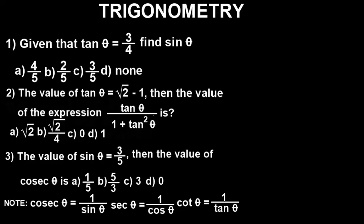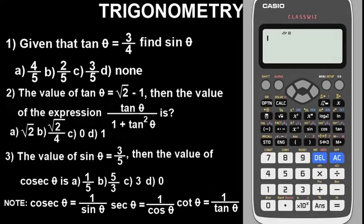Before we bring the Casio calculator on screen, let's look at the equations here and check what we are asked to find, then begin to solve them one after the other. Question 1: given that tan theta equals 3 over 14, find sin theta. Question 2: the value of tan theta equals root 2 minus 1 — find the value of the expression. Question 3: given that sin theta equals 2 by 5, find the value of cos theta.